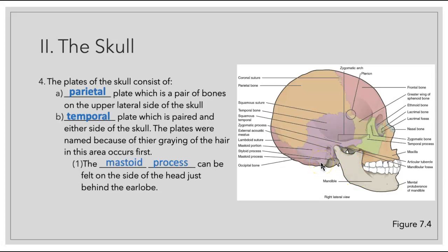On the temporal bone we're also going to have a bump known as the mastoid process. If you go behind your earlobe, you should be able to palpate that. If you're familiar with the muscle that attaches to it, called the sternocleidomastoid muscle — that large muscle in your neck — you can lead yourself over to the attachment site, which is the mastoid process.